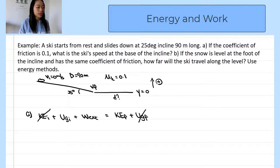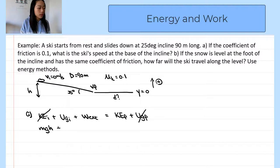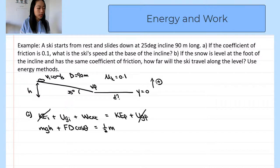We are left with three terms. The initial gravitational potential energy is mass times g times h, where h is the initial height. The work done equals the magnitude of the external force times the distance traveled times cosine theta, where theta is the angle between the force and the displacement. This equals the final kinetic energy, which is one-half times the mass times the final speed squared.